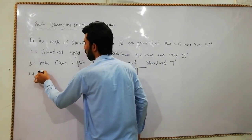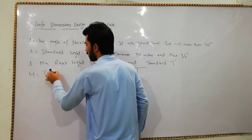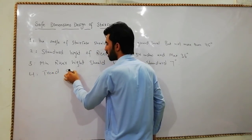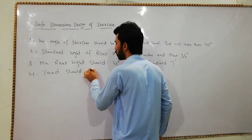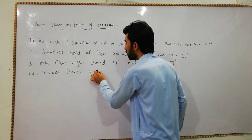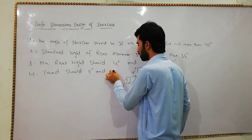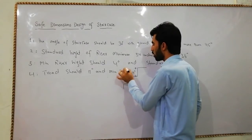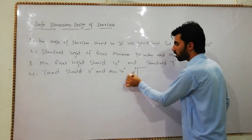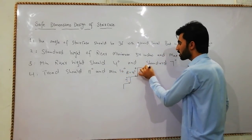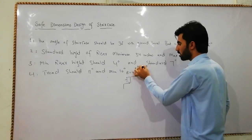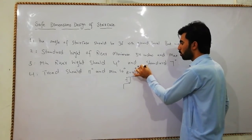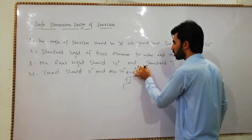The fourth dimension is the tread. The tread is the horizontal surface of each step — the part you step on. The standard tread should be 11 inches, and the minimum is 10 inches.